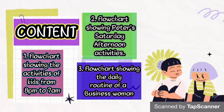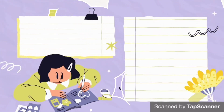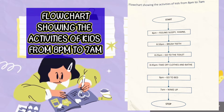The first flowchart shows the activities of kids from 8pm to 7am. The first shape is the start, which is known as the oval shape. At 8pm the child was feeling sleepy. At 8:10pm the child remembered she needed to brush her teeth. After brushing her teeth, at 8:25pm she went to use the toilet. After using the toilet, at 8:45pm she took off her clothes and took her bath. After taking her bath, at 9pm she went to bed to sleep.